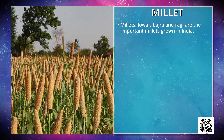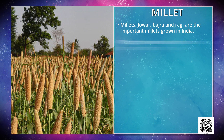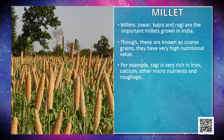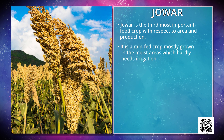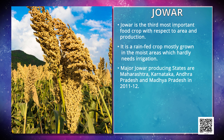After wheat, it is the turn of millets — jowar, bajra and ragi. Though these are known as coarse grains, they have very high nutritional value. For example, ragi is very rich in iron, calcium, other micronutrients and roughage. Jowar is the third most important food crop with respect to area and production. It is a rain-fed crop mostly grown in moist areas which hardly needs irrigation. Major jowar-producing states are Maharashtra, Karnataka, Andhra Pradesh and Madhya Pradesh.